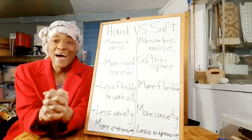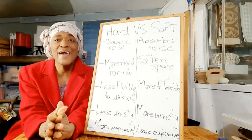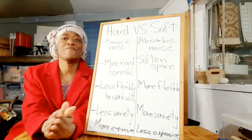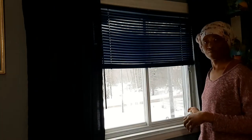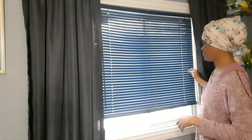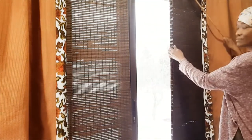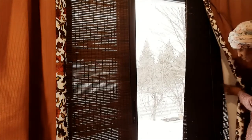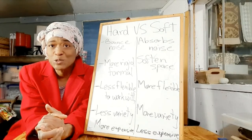Basically, as the word suggests, hard window treatments are any window treatments that are made from anything other than fabric. So for example your vinyl, your wood, whatever type of wood, bamboo, metal like your metal venetian blinds or your vinyl venetian blinds, your wooden shutters — those are all classified as hard window treatments.